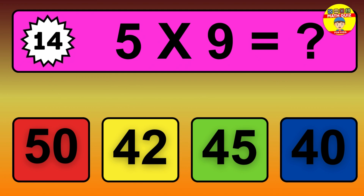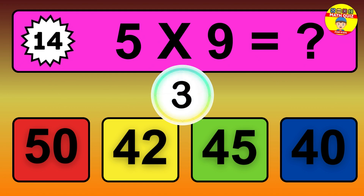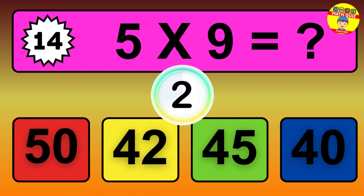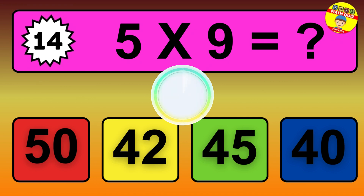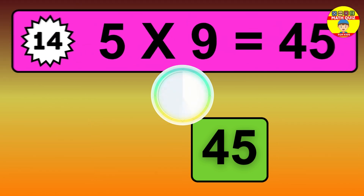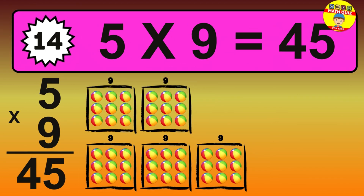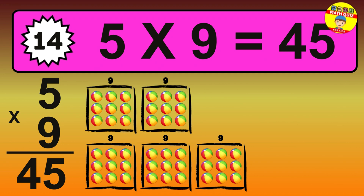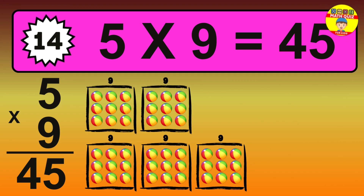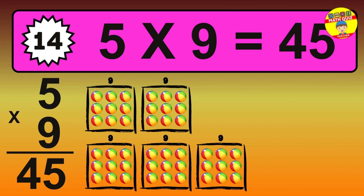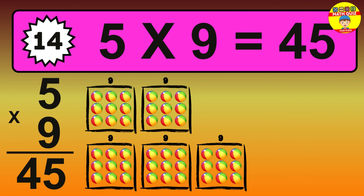Question 14. 5 times 9 equals what? The answer is 5 times 9 is 45. To calculate, we have 5 groups with 9 balls each. So how many balls do we have? 45 balls.